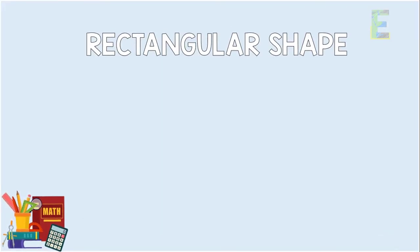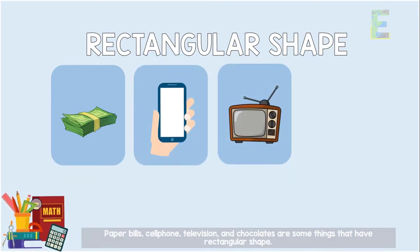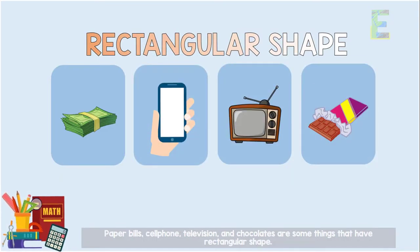There are many things in this world that are in rectangular shape. Paper bills, cell phone, television, and chocolates are some of the things that have rectangular shape.